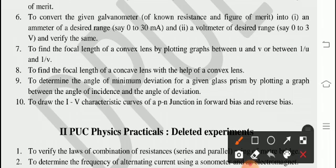Seventh one, to find the focal length of a convex lens by plotting graphs between U and V or between 1 by U and 1 by V. Eighth one, to find the focal length of a concave lens with the help of a convex lens. Ninth one, to determine the angle of minimum deviation for a given glass prism by plotting a graph between the angle of incidence and the angle of deviation. Tenth one, to draw the I-V characteristic curve of a PN junction in forward bias and reverse bias.